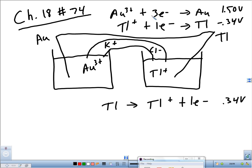So that's what we're going to do. Tl goes to Tl⁺ + 1e⁻, and now that voltage is going to be 0.34 volts. So if I want to get the voltage, I'm going to have to multiply this all by three to add it to the gold. Because I'm looking for the overall cell reaction. And to do that, I need to add the gold to the thallium.